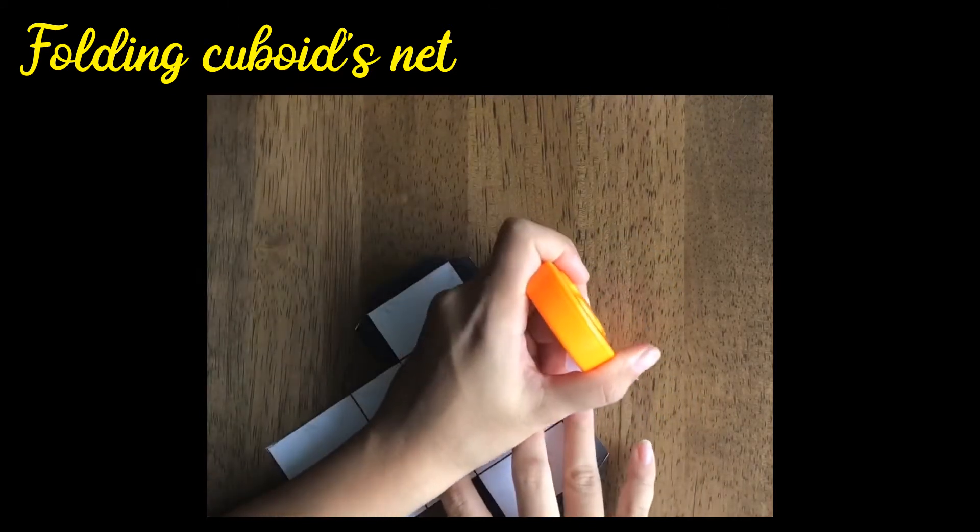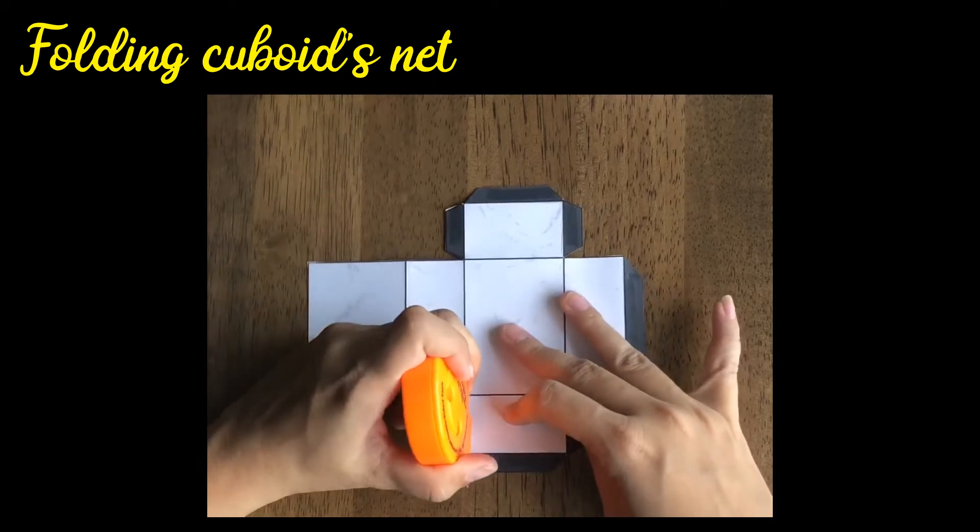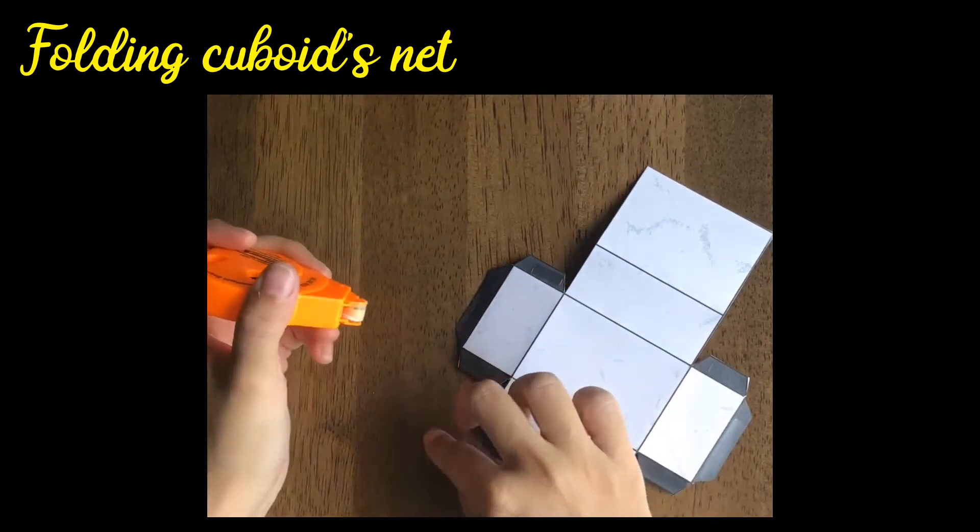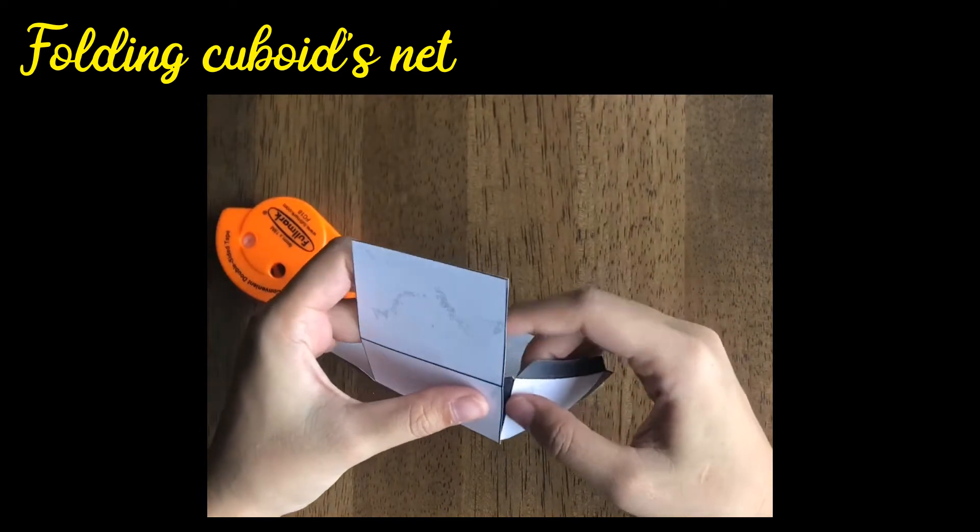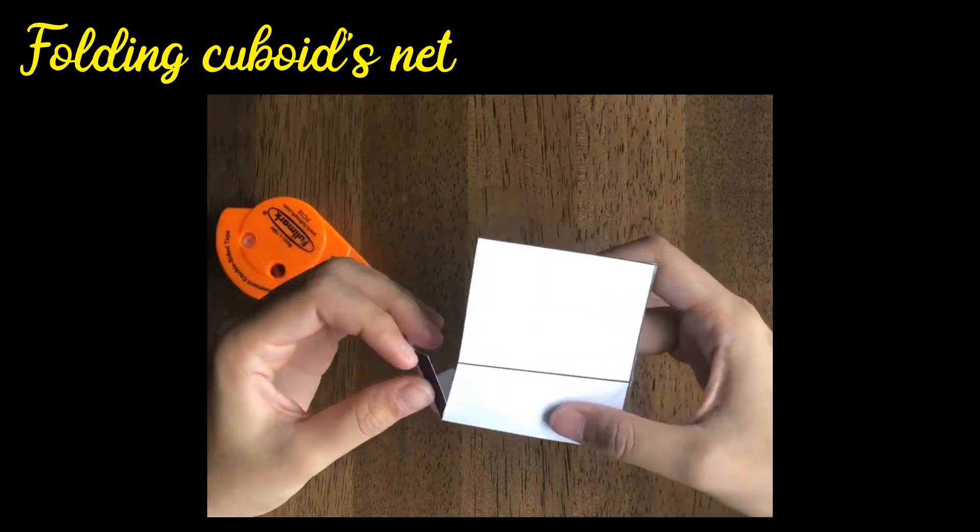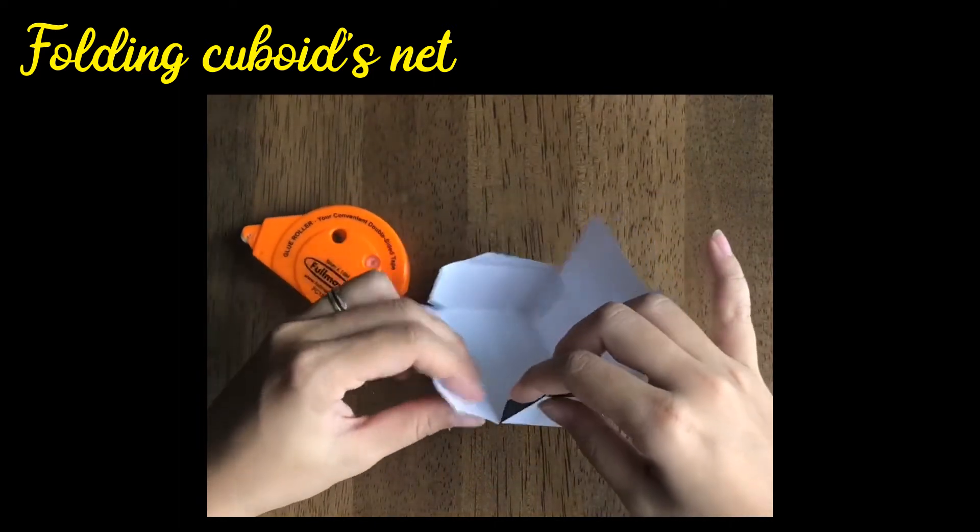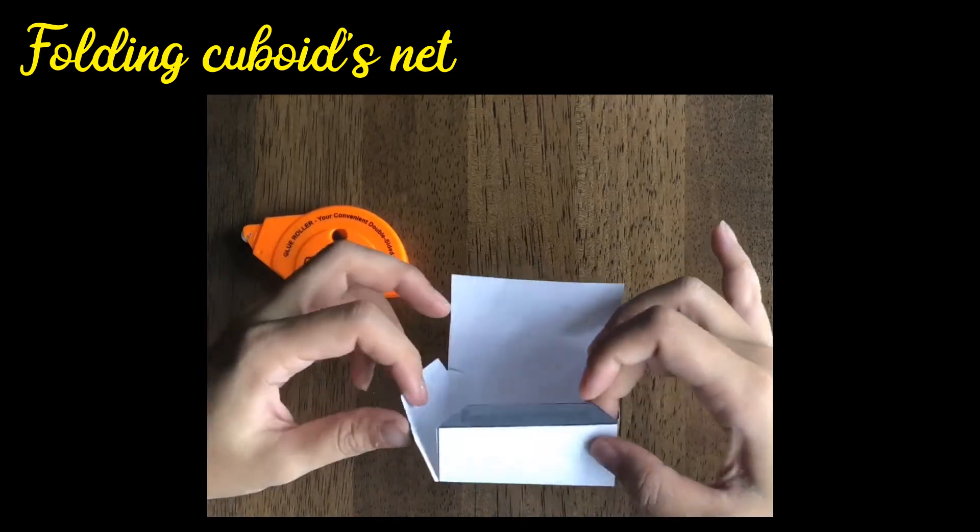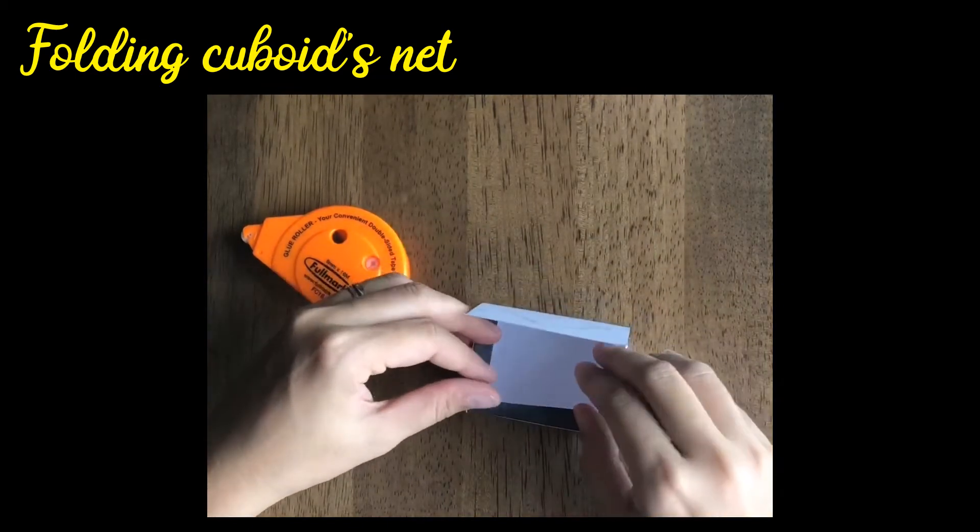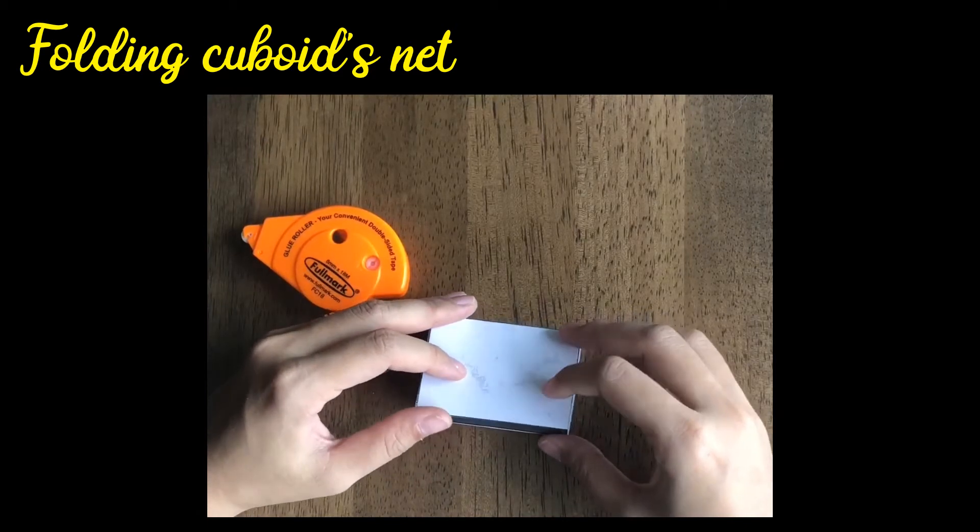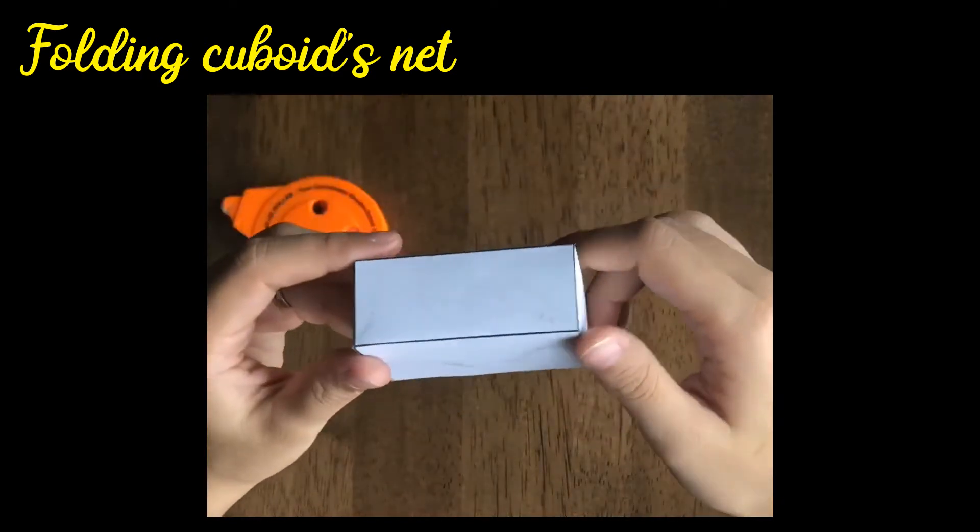You can use glue or like me, a glue roller. Or you can use double-sided tape. Once you're done putting the glue, then you fold it. Make sure the small sides are inside so you can glue it together. Fold it nicely. And ta-da! You have a cuboid.